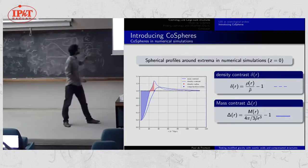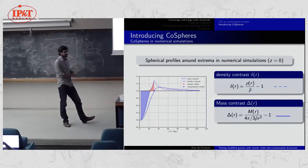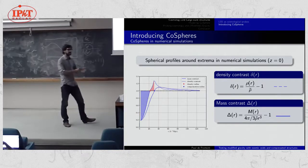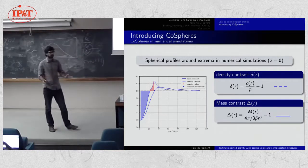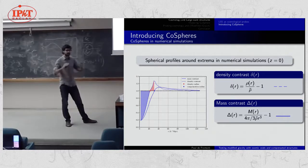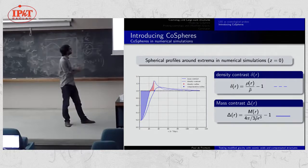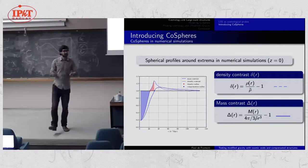Let me go back to a crucial point. This is a spherical profile around a minimum — a cosmic void in a numerical simulation. The x-axis is radius in comoving megaparsecs. The dashed line shows the spherically averaged density contrast, and the full line is the mass contrast — the integrated density contrast, or the fraction of enclosed mass divided by the homogeneous mass. There exists a particular radius, the compensation radius, where the enclosed mass exactly equals the homogeneous mass.